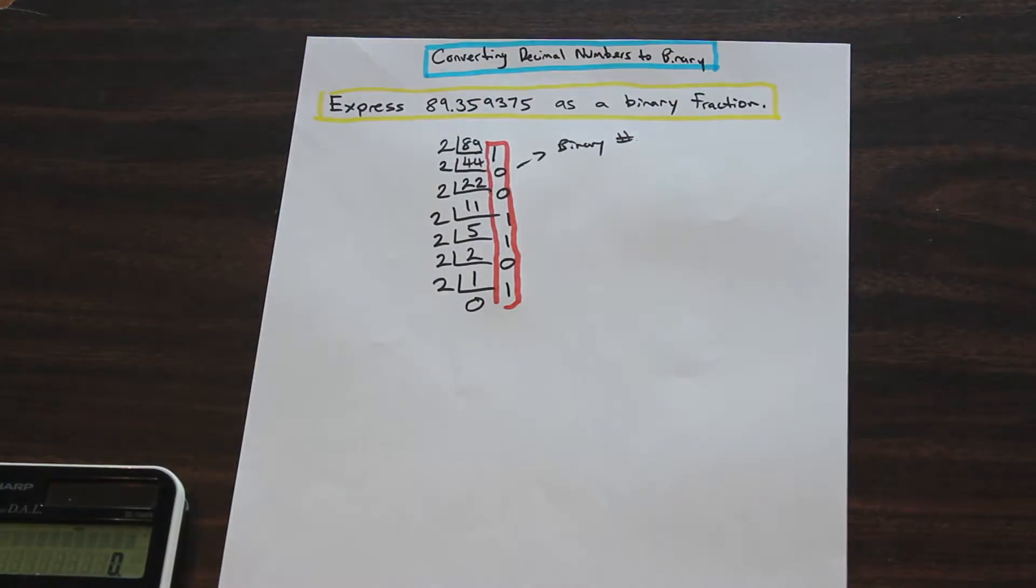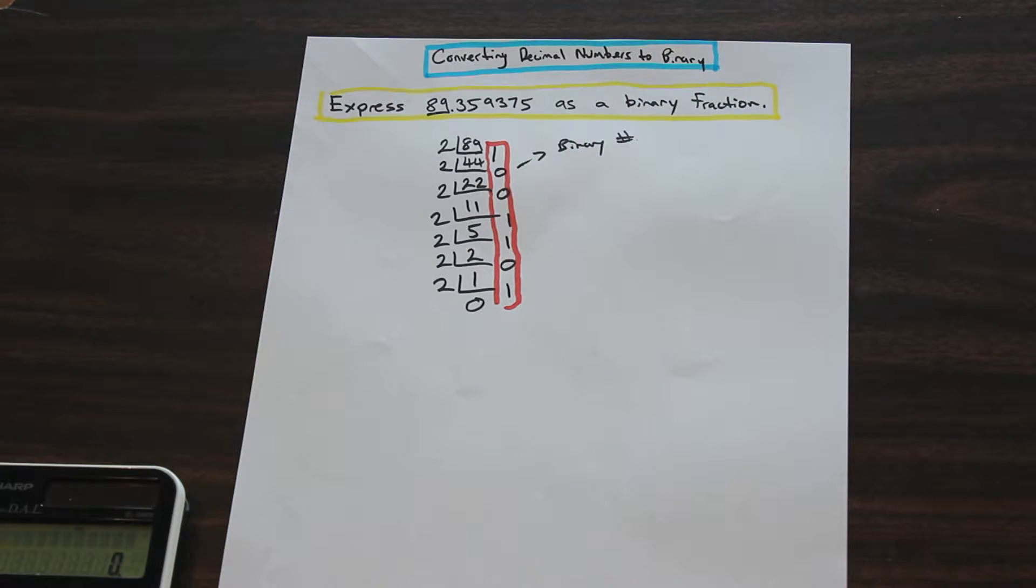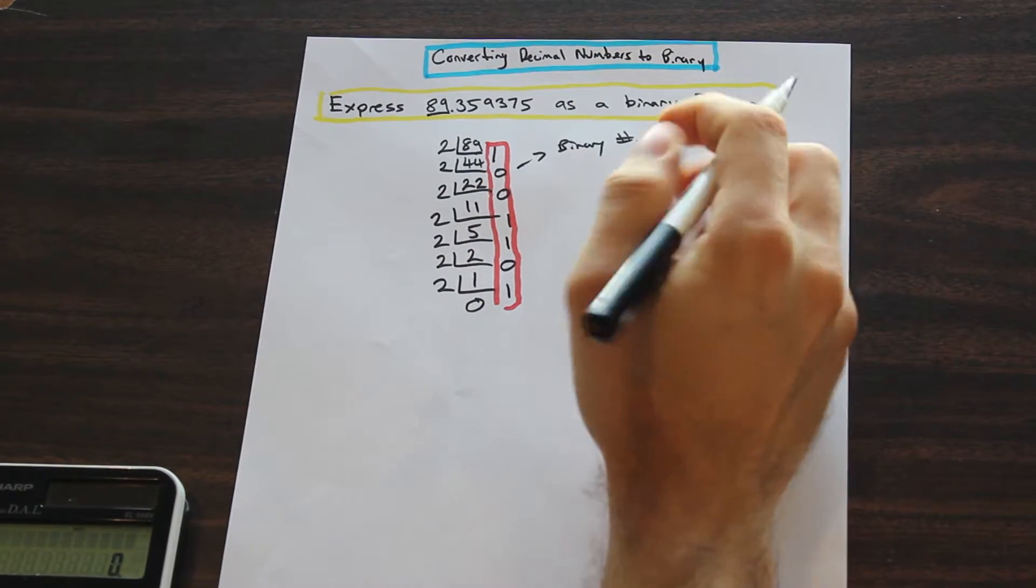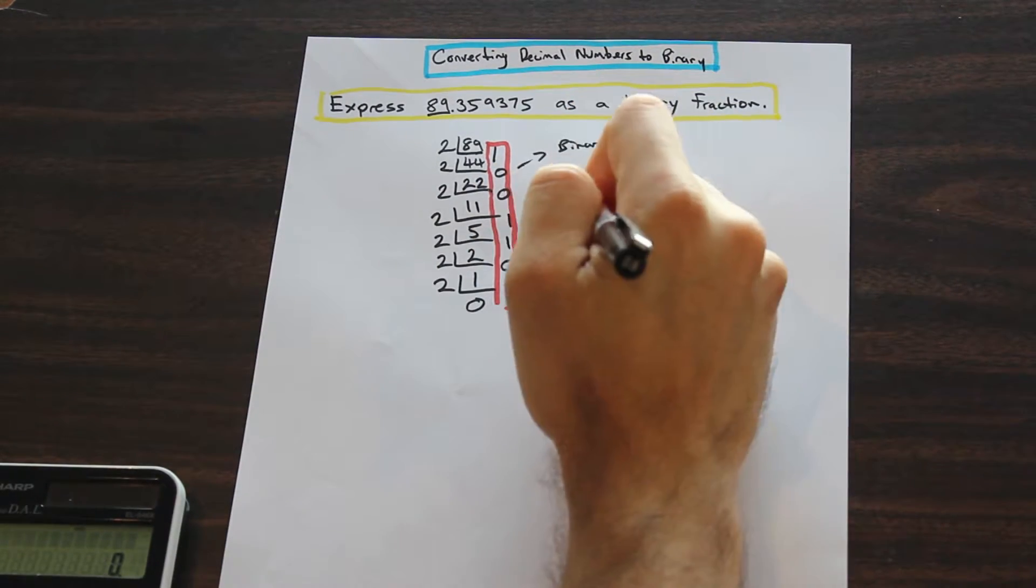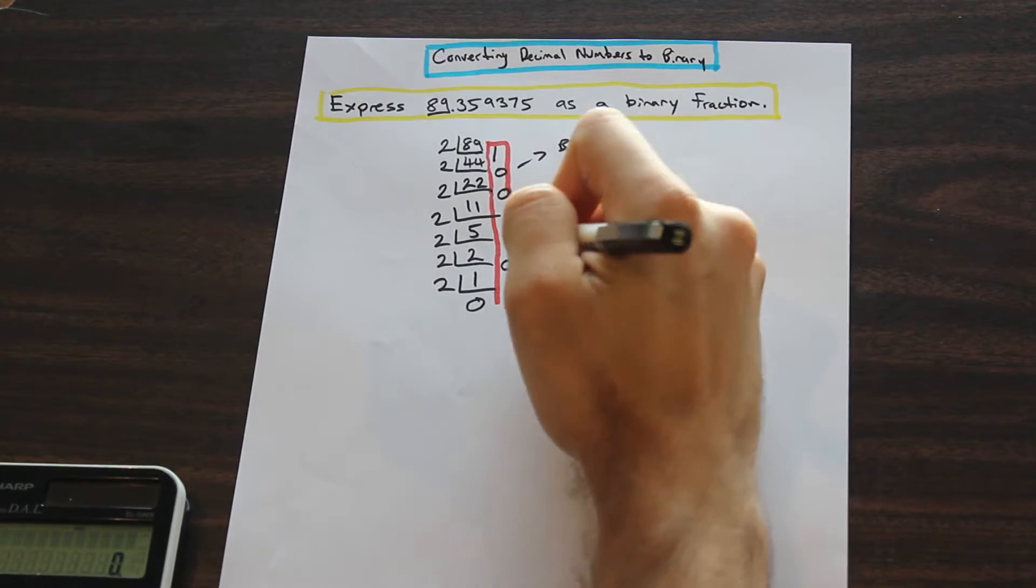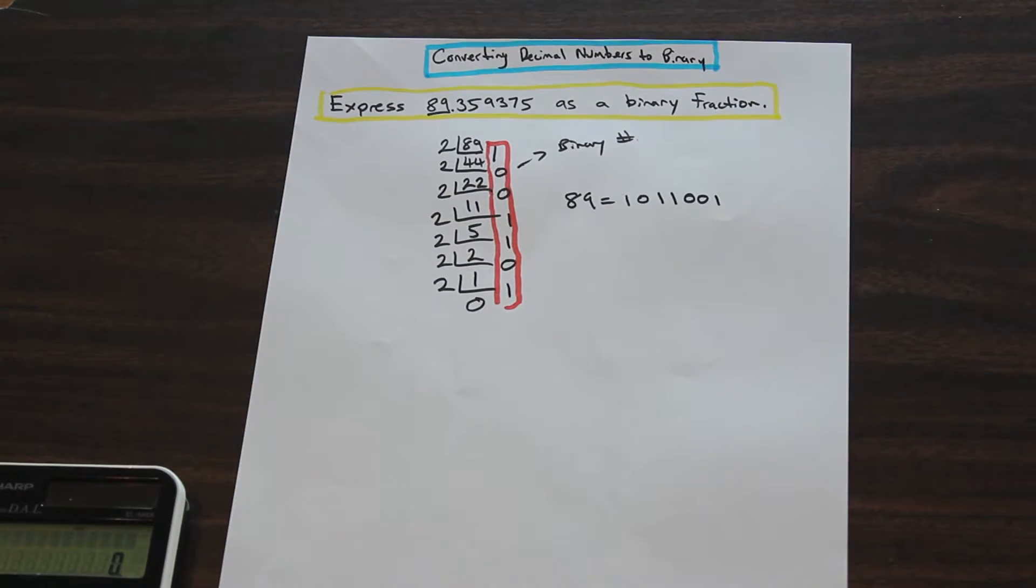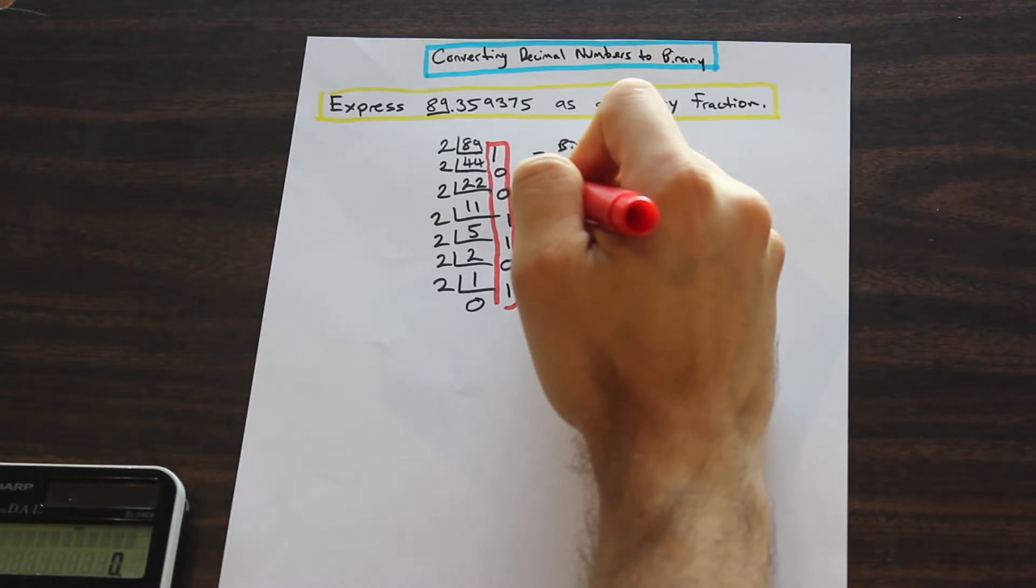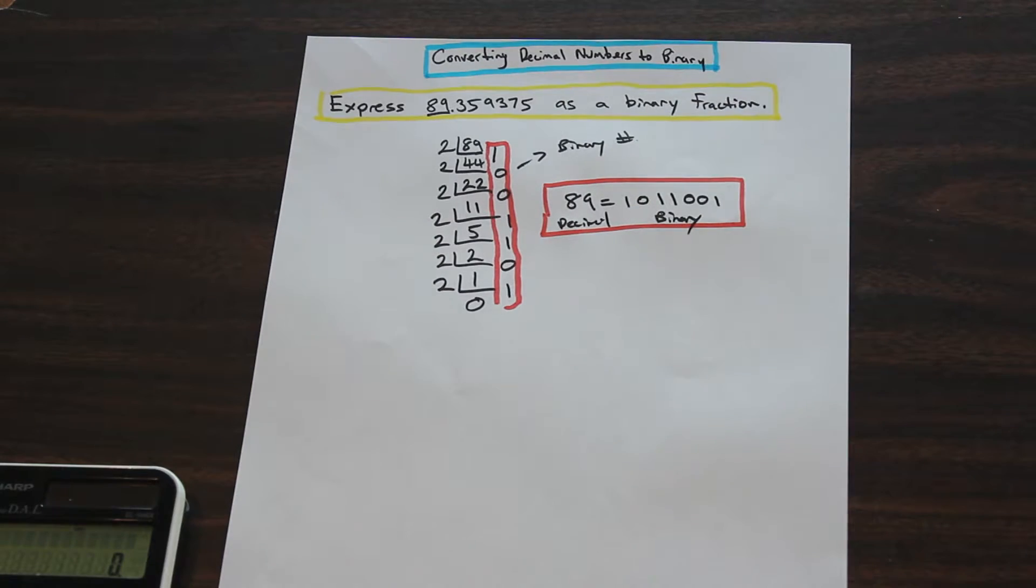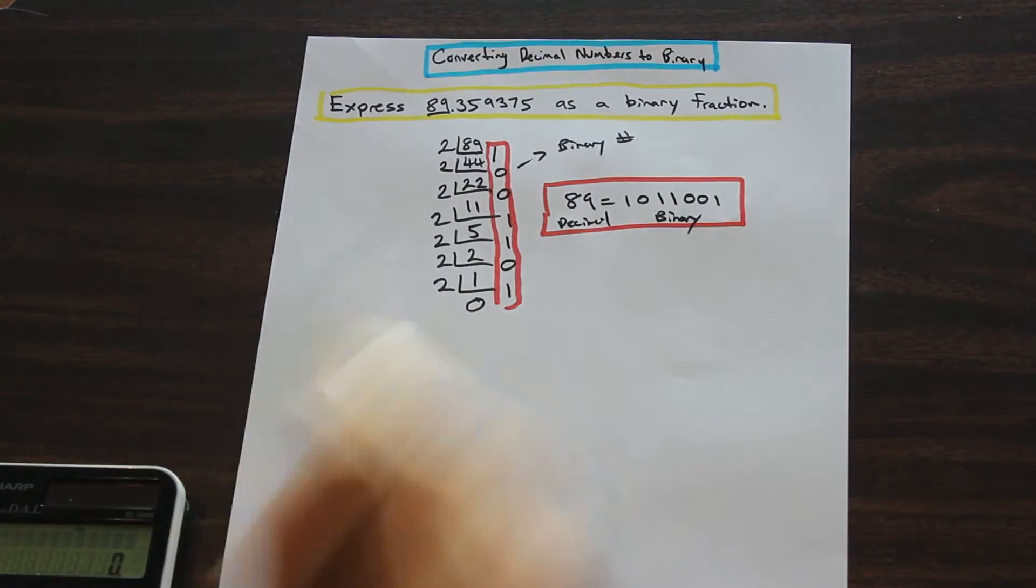It's just the left side of the whole number. So we've just gone ahead and we found this part of the number, the decimal number. So we're going to express that from the bottom up. So we're going to say that 89 is equal to 1011001 in binary. We've solved the first half of the question. We've solved for 89 as a binary number. Now we need to do the decimal.